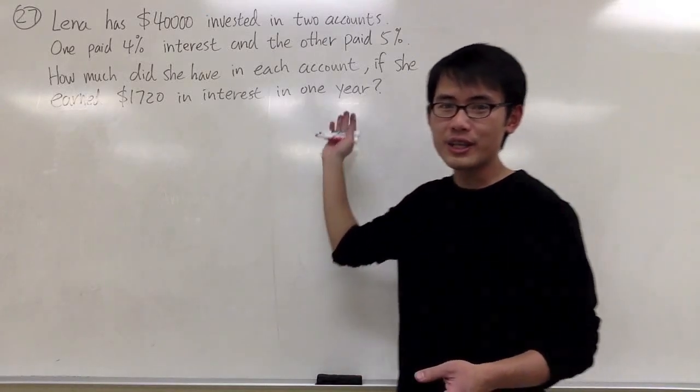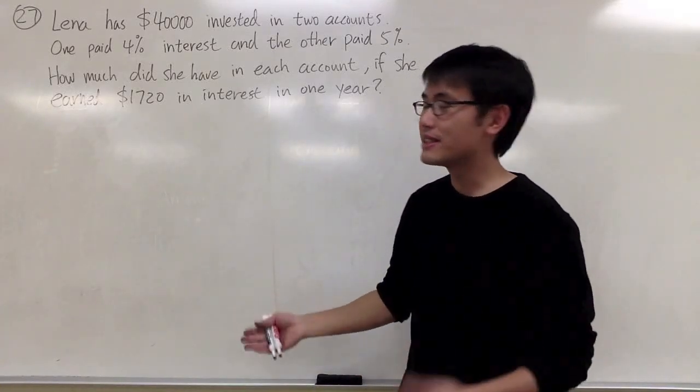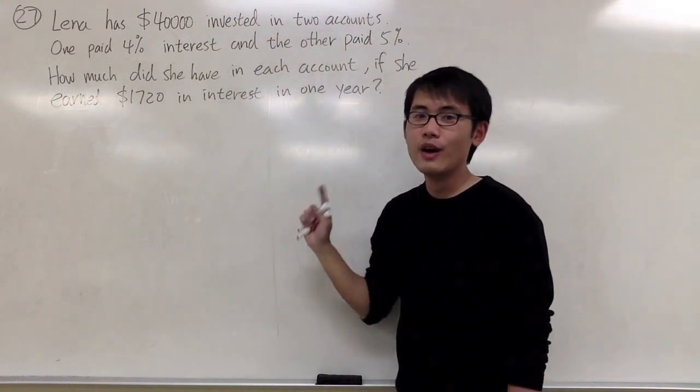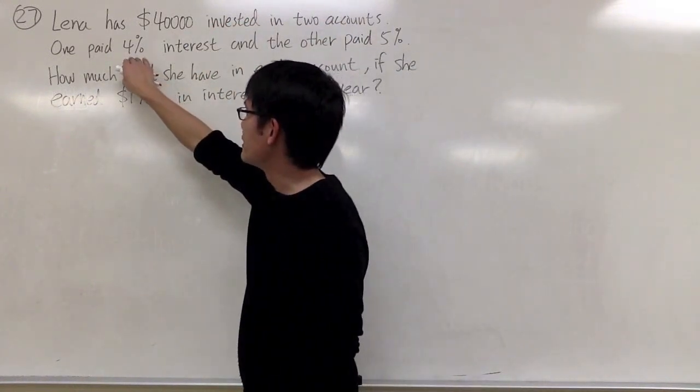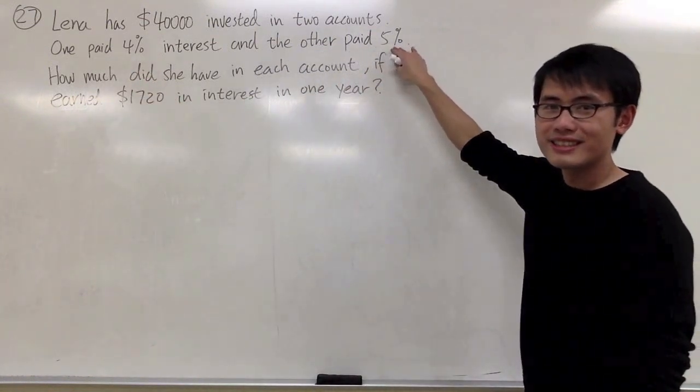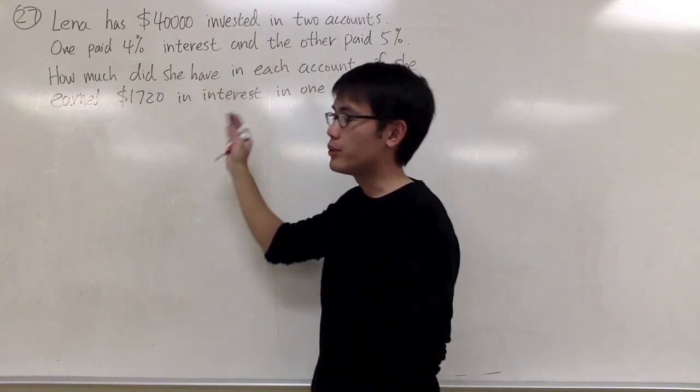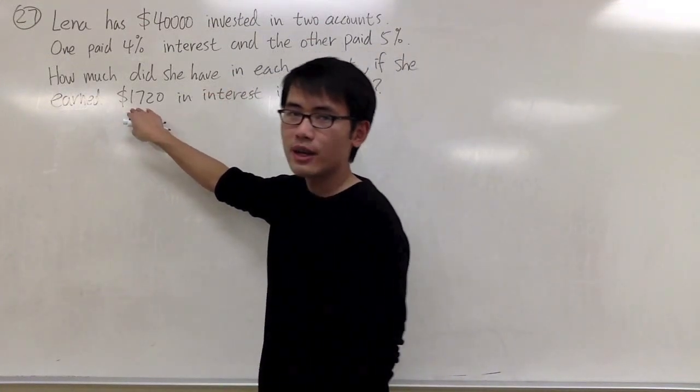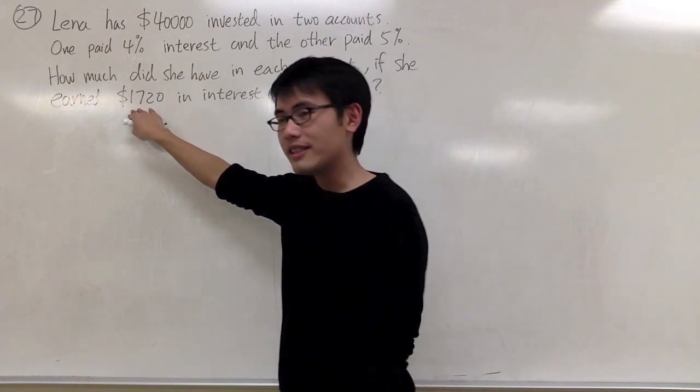For question number 27, we are talking about investment. The situation is, we put $40,000 into two accounts. The first account pays us 4% interest rate, and the second account pays us 5% interest rate. How much do we put into each account if after one year we make a total of $1,720?